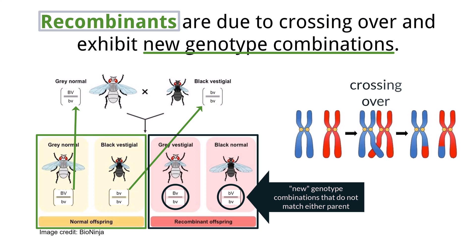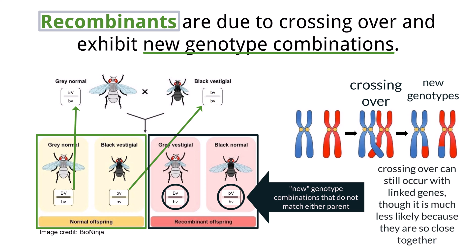Because of crossing over, a new combination that does not match either parent is created. You can see that because of crossing over, the recombinants demonstrate a gray body with short wings or vestigial, or a black body with normal or long wings. Neither of these combinations were present in the parents. Even though these genes are linked, crossing over can occur, though it is less likely.